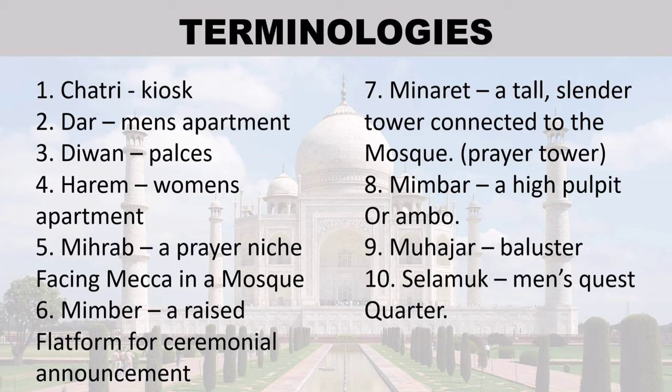Terminologies: Shatli — kiosk or door; Men's apartment — D1 palaces; Harib — women's apartment; Mihrab — a prayer niche facing Mecca in a mosque; Mimber — a raised platform for ceremonial announcement.